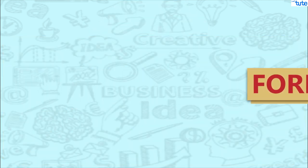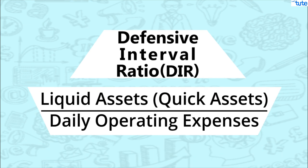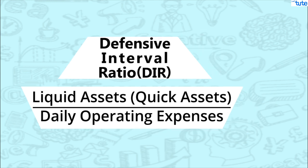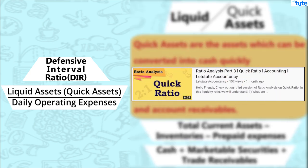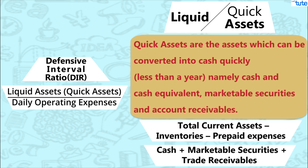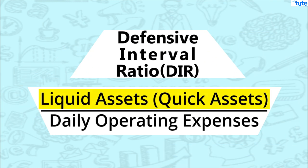Let's first look at the formula. Defensive Interval Ratio (DIR) = Liquid Assets or Quick Assets divided by Daily Operating Expenses. Now what are the liquid or quick assets? As already discussed in the quick ratio session, these are current assets that can be converted into liquidity quickly — that is, current assets minus inventories minus prepaid expenses, or we can say cash plus marketable securities plus trade receivables. That is the numerator part of the ratio.